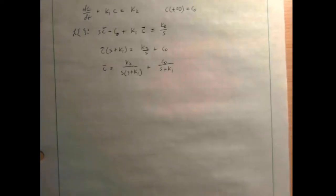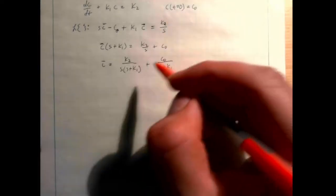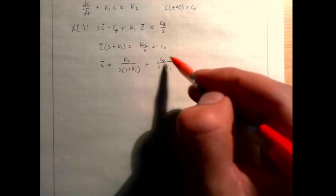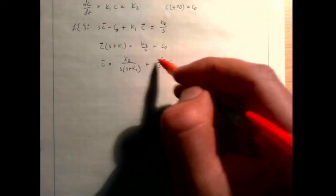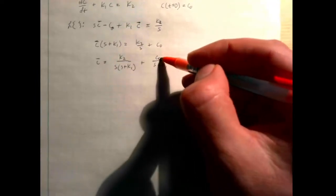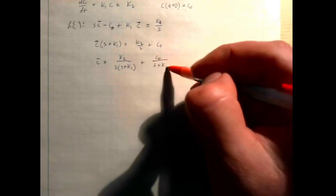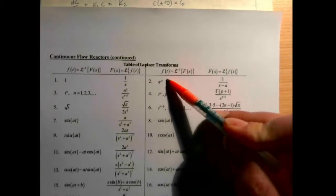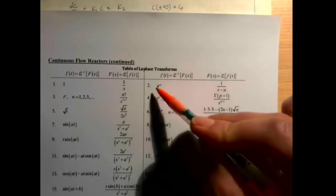We've solved the differential equation in the frequency domain. The last part — often the hardest — is doing the inversion. One useful property of Laplace transforms is that it's distributive, so we can invert each part separately. The right term, C0/(s+K1), is straightforward: C0 is a constant, so we factor it out and look up 1/(s+K1). One over (s minus a constant) is e to the constant times t, so 1/(s+K1) gives e^(−K1·t).